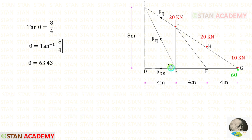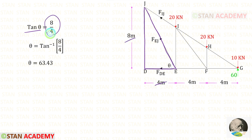We need to find this angle. Let us keep this angle as theta and take this triangle. In this triangle, using the tan theta formula, tan theta will be 8 upon 4. For theta, we will get 63.43°.